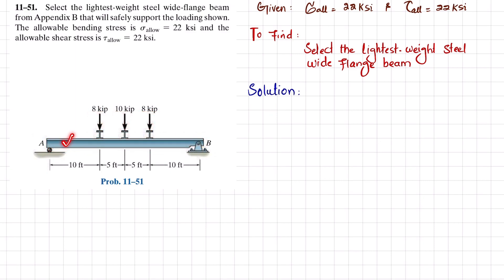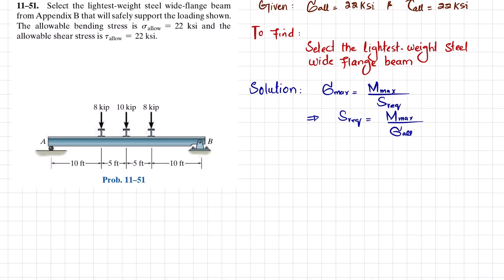Let's start with the solution. The maximum bending stress is equal to the maximum bending moment divided by the required section modulus. From this, the required section modulus equals the maximum bending moment divided by the allowable bending stress. We will find this required section modulus for the given loading.